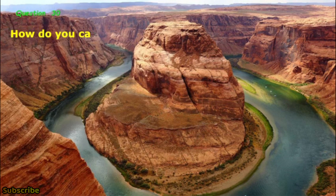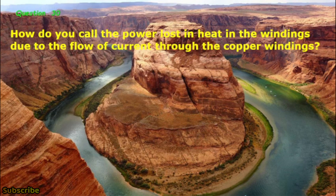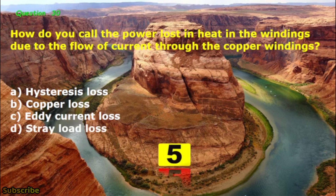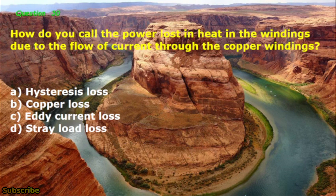Question No. 30: How do you call the power lost as heat in the windings due to the flow of current through the copper windings? A. Hysteresis loss, B. Copper loss, C. Eddy current loss, D. Stray load loss. The correct answer is letter B: Copper loss.